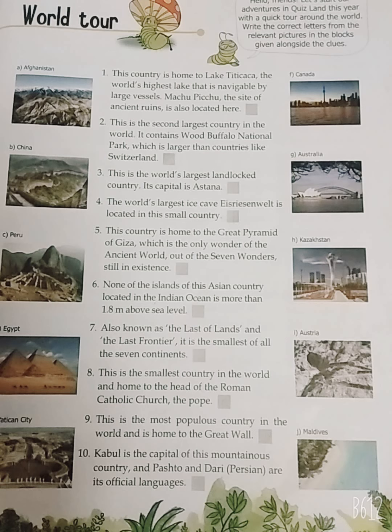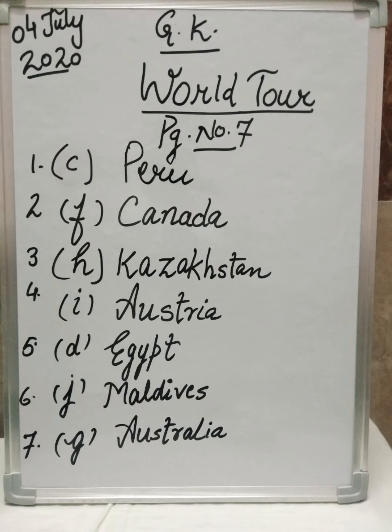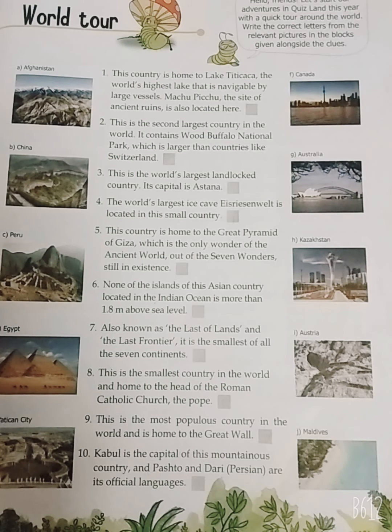Students, have you noted down these seven answers? Eighth: this is the smallest country in the world and home to the head of the Roman Catholic Church, the Pope.